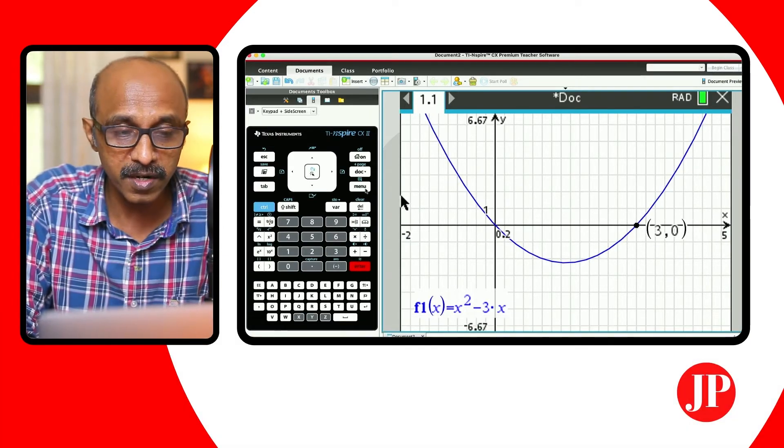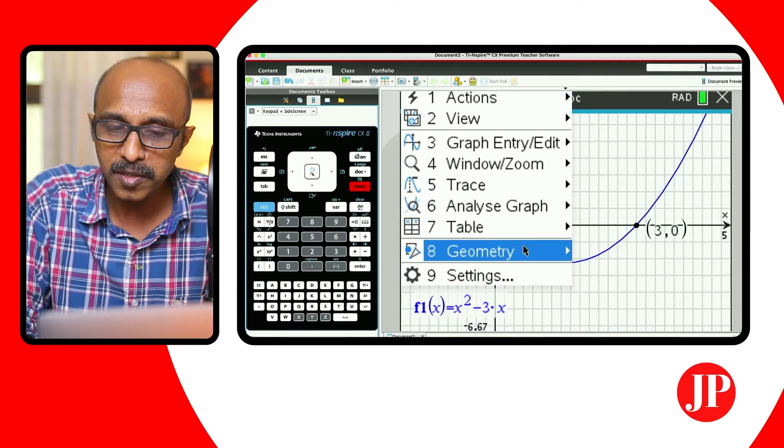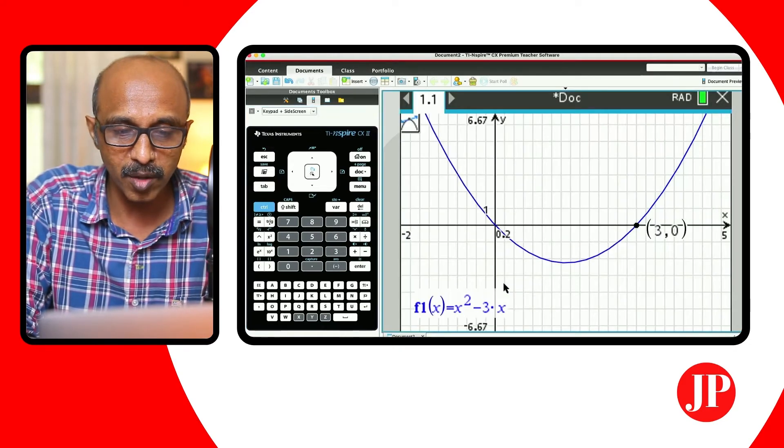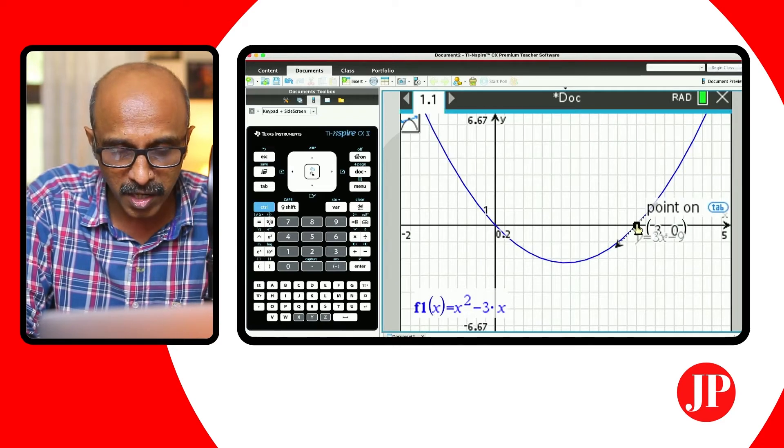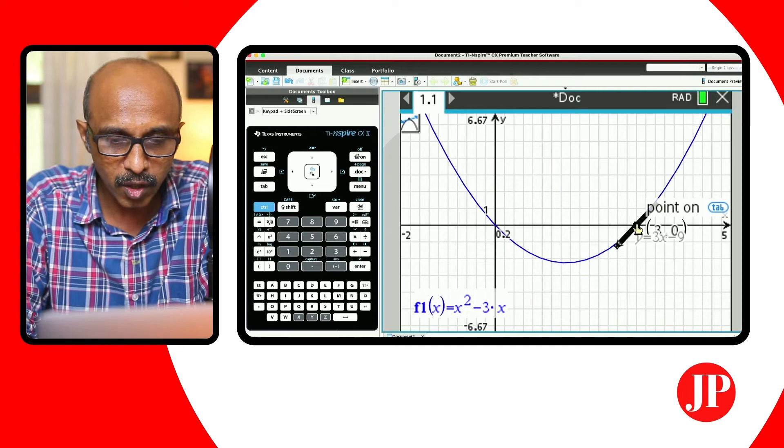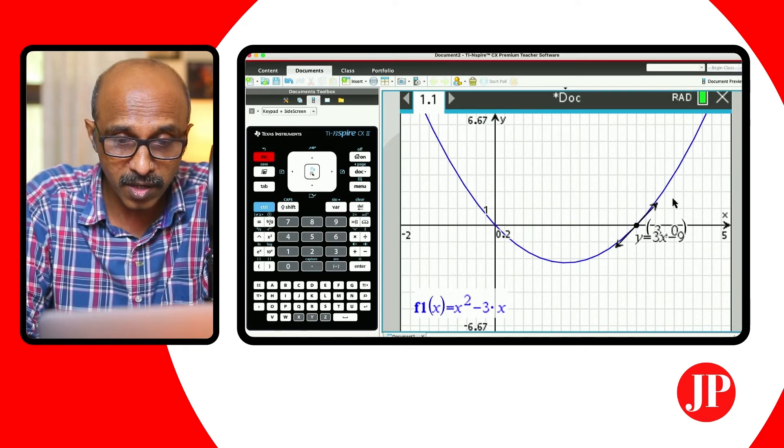And using this point where it is now, we can go to menu, geometry, choose points and lines and choose our tangent option. That's number eight. And I make sure that when I click that point, it should say point on. And it will draw the tangent at that point three comma zero.